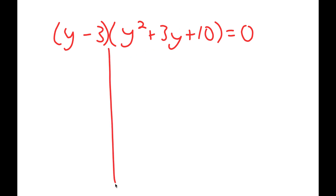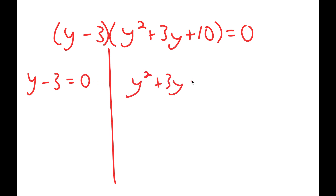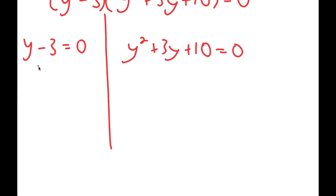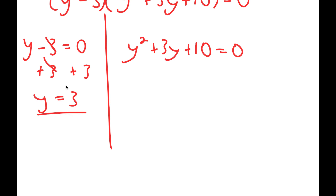Now if I divide this into two equations, I get y minus 3 is equal to 0, and y squared plus 3y plus 10 is equal to 0. For y minus 3 equals 0, I'm going to add 3 on both sides, so I get y equals 3.